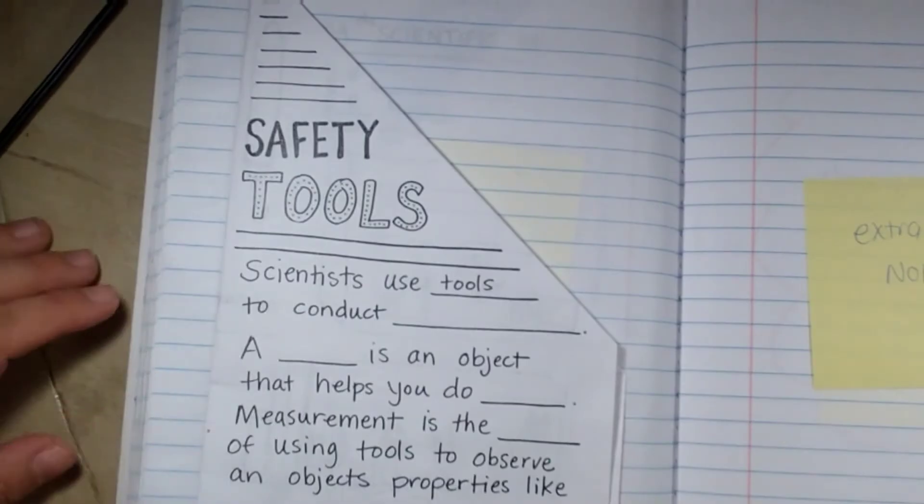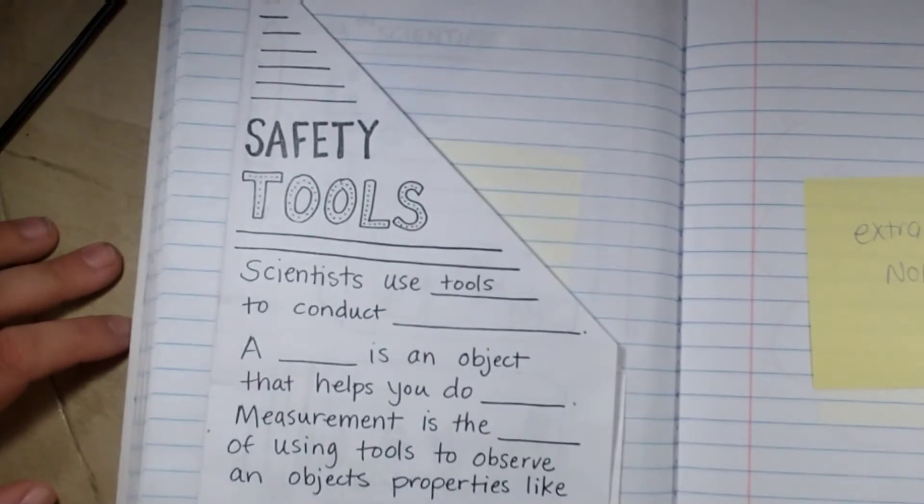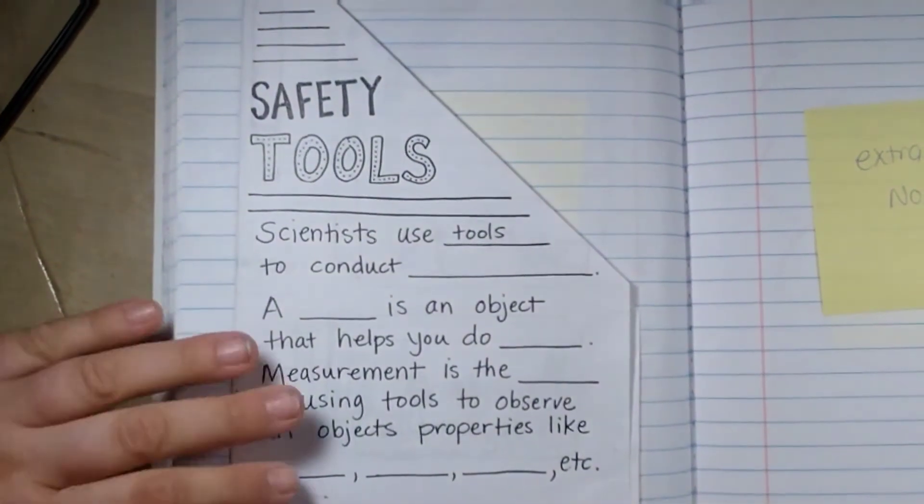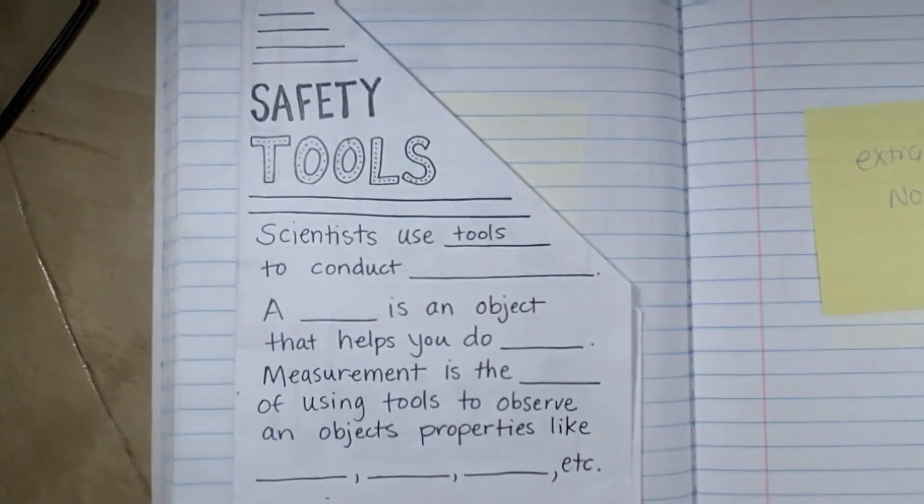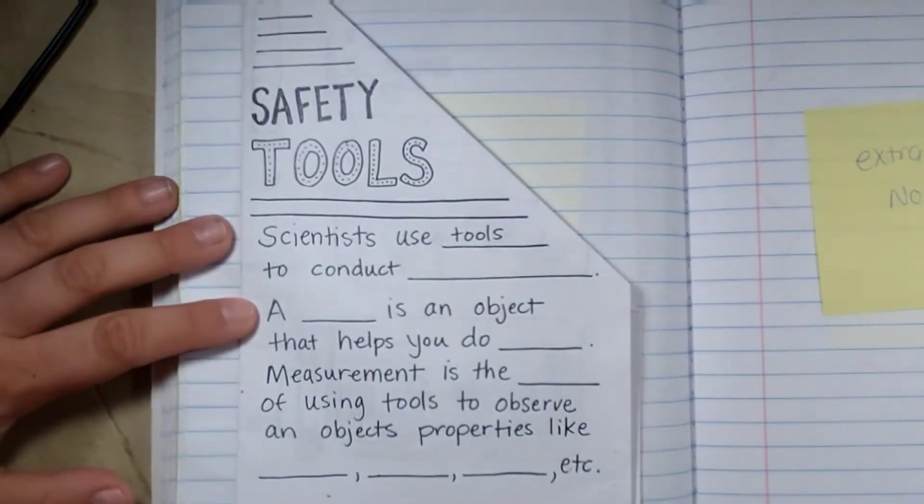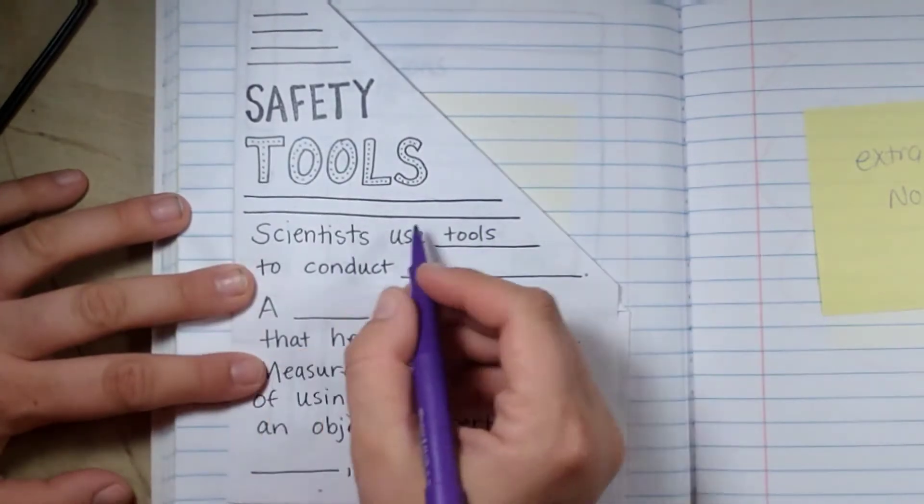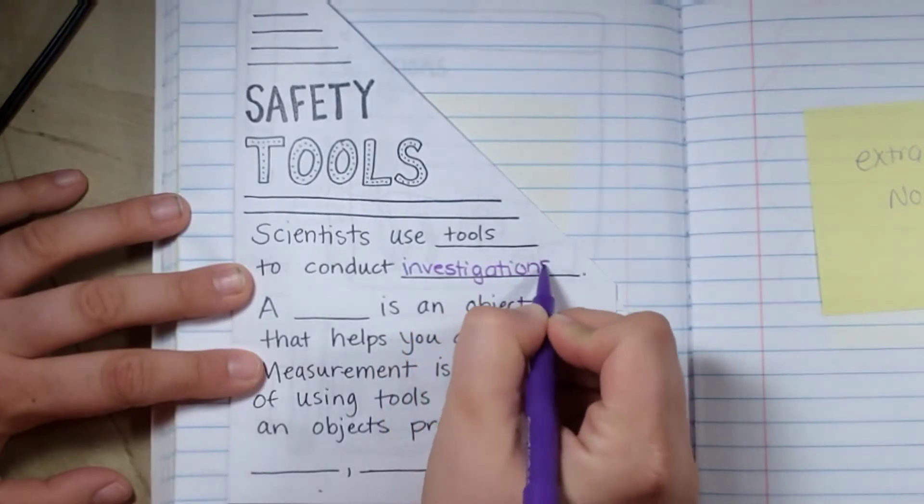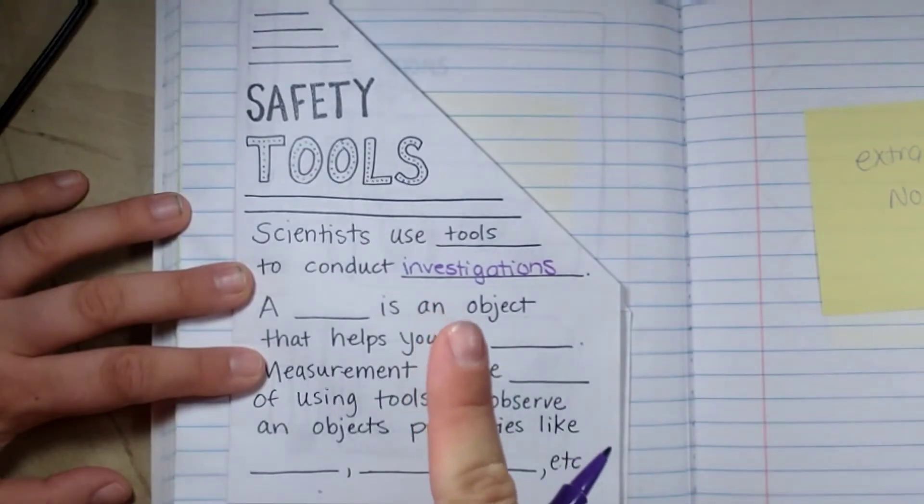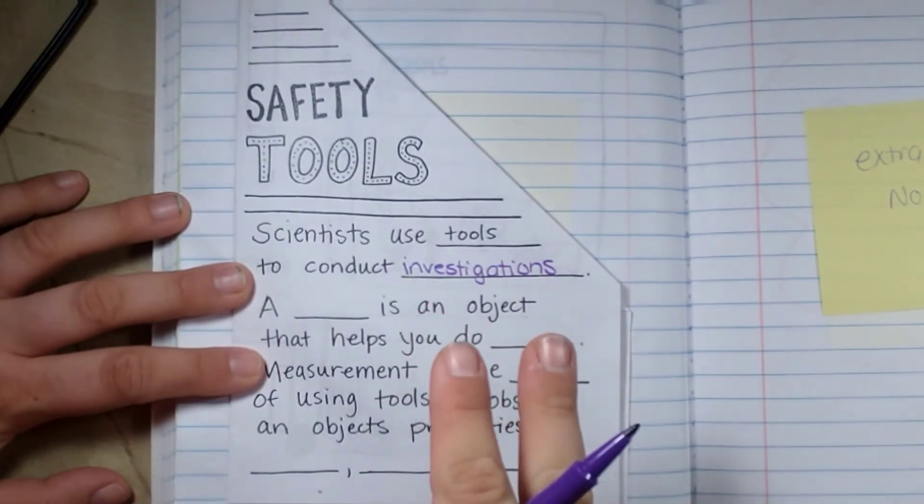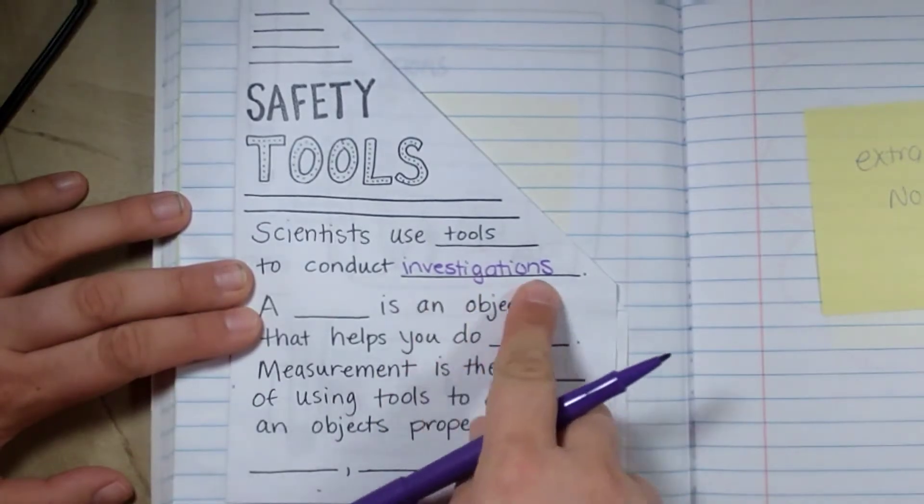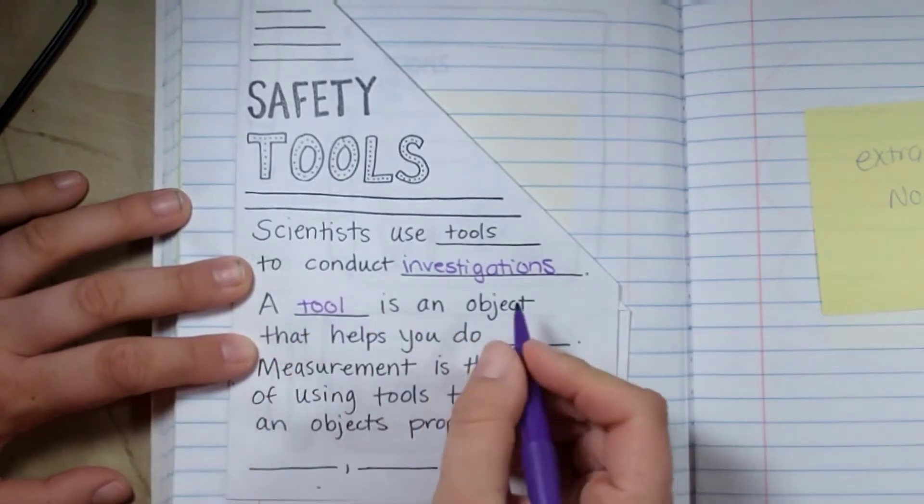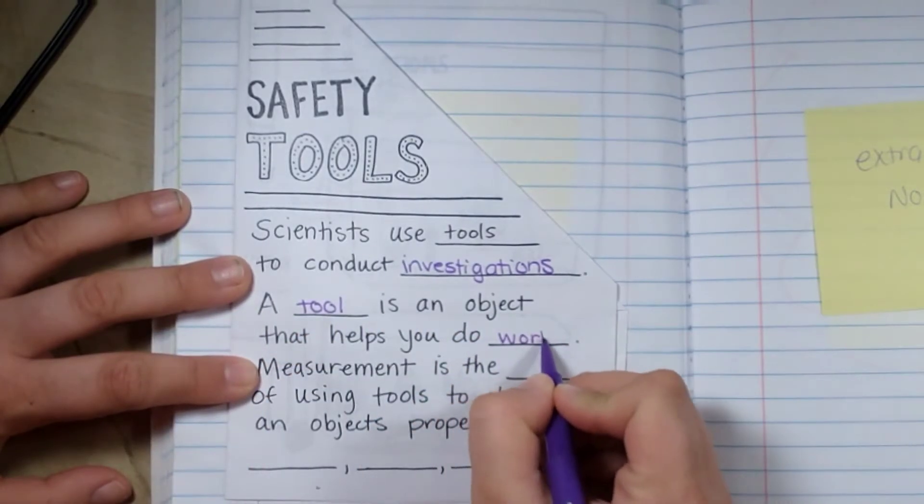We know the process of how a scientist tests their observations and hypothesis, but what are the tools that they use to do that? We know they could do it in a lab, but what is in the lab for them to use? This lesson we're going to go over the different tools that a scientist could use. Scientists use tools to conduct investigations. It doesn't have to be an experiment. Remember, there are three types of investigations: the experiment, the model, and the observation. So you could use these in all of those. A tool is an object that helps you do work, and it has a specific purpose.